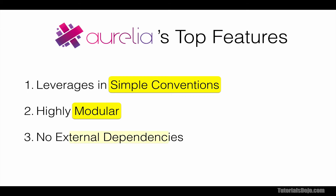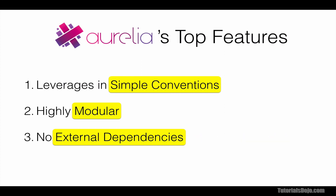And lastly, it has no external dependencies. It means that Aurelia has its own modules for routing, HTTP, polyfills, and many more, compared to other frameworks. For instance, Angular2 has an external dependency on a third-party library called RxJS for its HTTP module, unlike Aurelia that has its own Aurelia HTTP Client module and Aurelia Fetch Client module to handle HTTP operations. This gives Aurelia the much-needed stability and control over its core modules compared to other frameworks that can be affected by changes on their external, third-party dependencies.